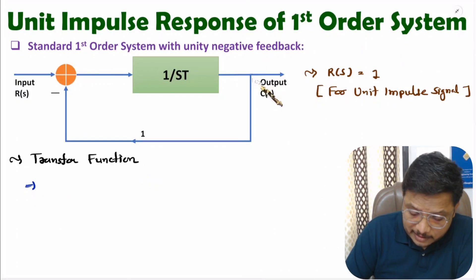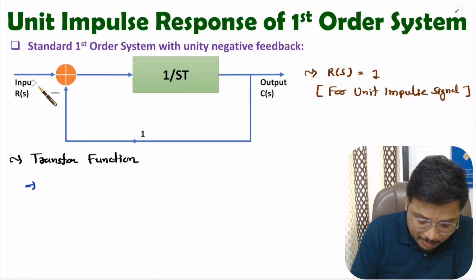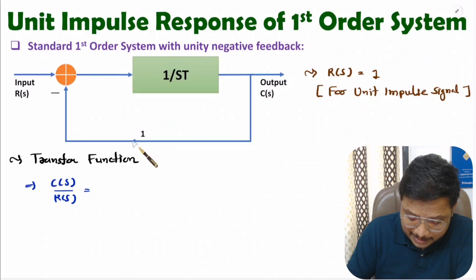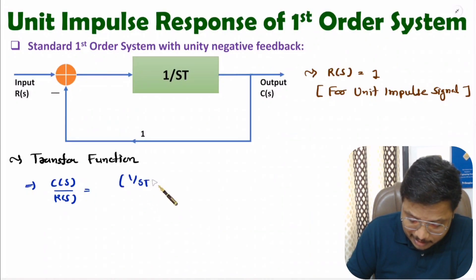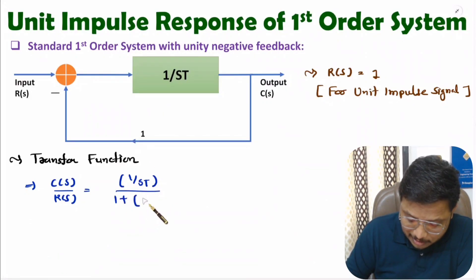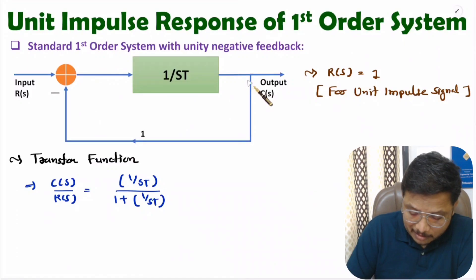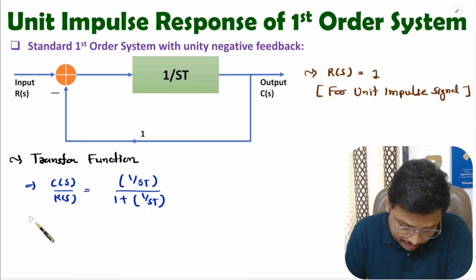The transfer function is the ratio of output C(s) divided by input R(s). For unity negative feedback, the transfer function is G(s) divided by 1 plus G(s)H(s). Here G(s) is 1 divided by sT and H(s) is 1, so the transfer function becomes 1 divided by 1 plus 1/sT for unity negative feedback with system gain 1/sT.